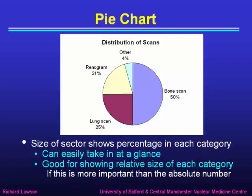Here's another way of displaying data as a pie chart. Here the size of each sector shows the percentage in each category. Again you can easily take it in at a glance, but this particular display is very good for showing the relative size of each category. So if that is more important than the absolute number, a pie chart is very good. For example, it's very easy to see that bone scans represent half of the total number of scans, and lung scans a quarter.